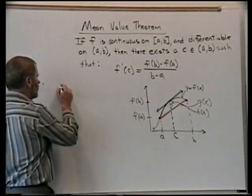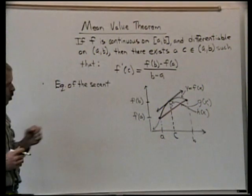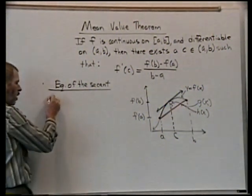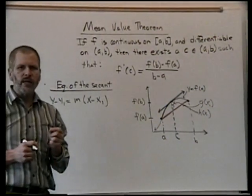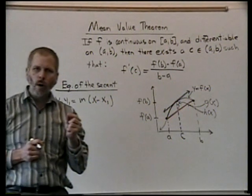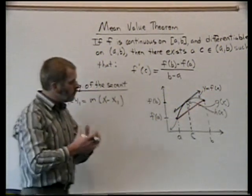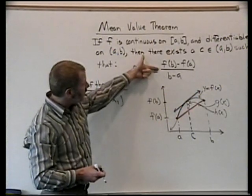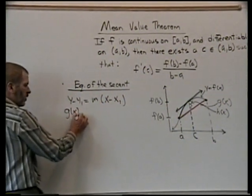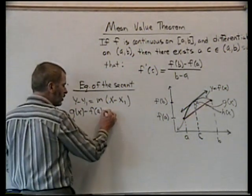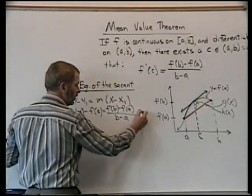We're going to need the equation of the secant line, the line that joins those two points. We know that y - y₁ equals m(x - x₁). To generate the equation of a line, we need a point on the line and the slope. I can use the point (a, f(a)) or (b, f(b)). The slope is [f(b) - f(a)] / (b - a). So if I'm going to call my y g(x), my y₁ is f(a), my slope is [f(b) - f(a)] / (b - a),